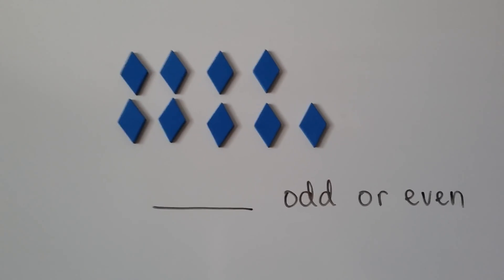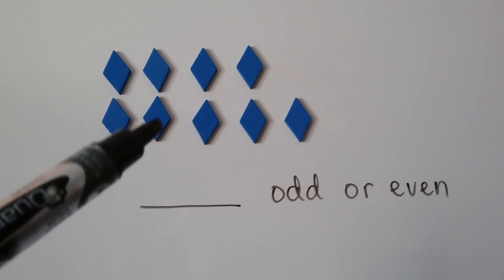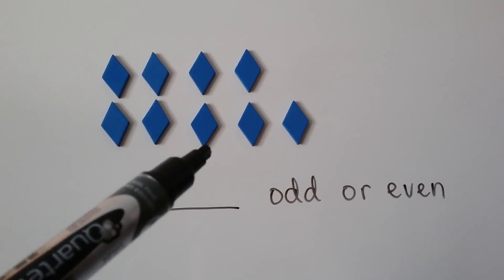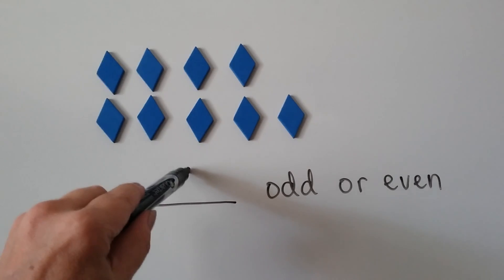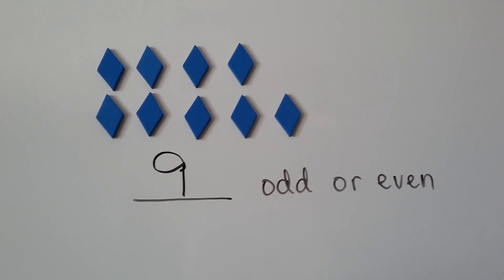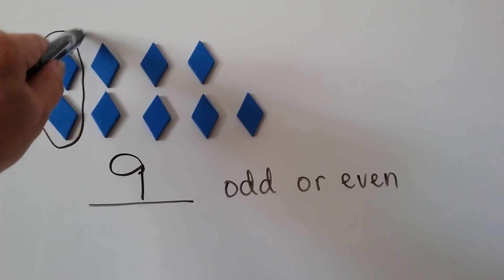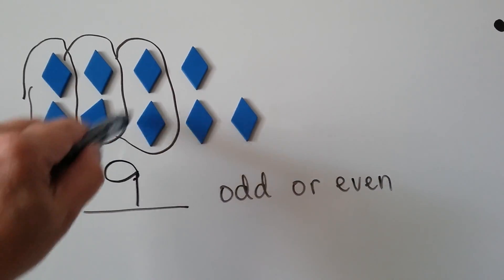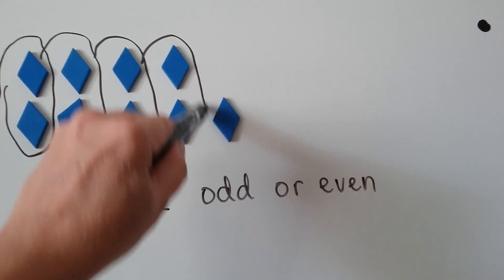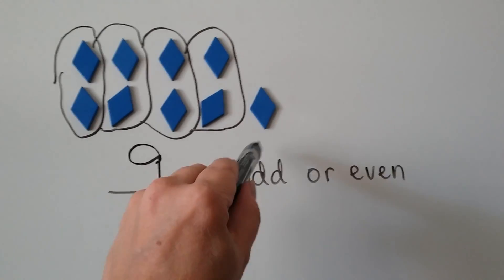Let's try these. How many are there? 1, 2, 3, 4, 5, 6, 7, 8, 9. There's 9. Let's make pairs. We have one left over, so it's odd.